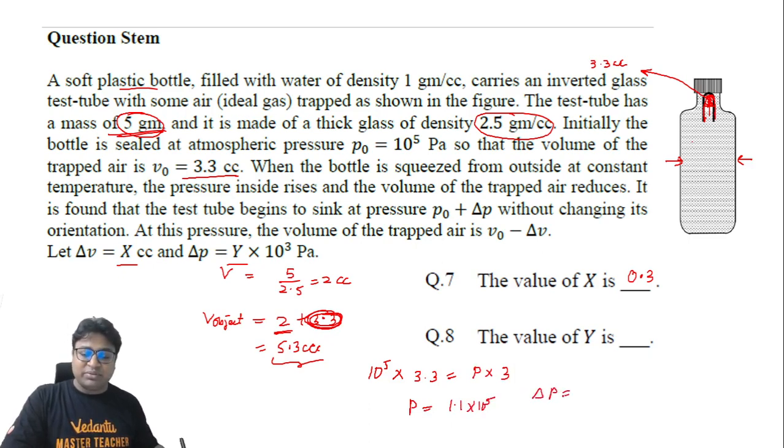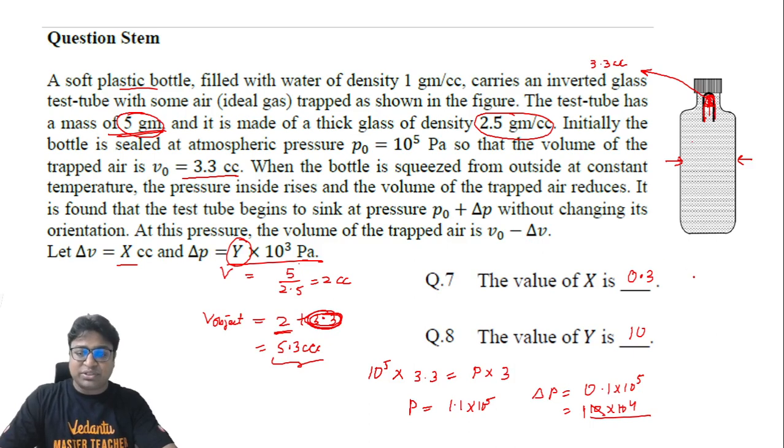So the final pressure becomes equal to 1.1 into 10 raised to power 5. So the increase in pressure becomes equal to 0.1 into 10 raised to power 5, so it becomes equal to 10 into 10 raised to power 4. So if I compare this value with this value, this is not 10, this is 1. So if I compare this value with this value, I guess the value of Y comes out to be 10. So according to this question, X will be 0.3 and Y will be 10.